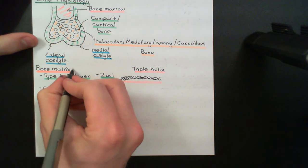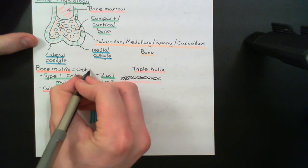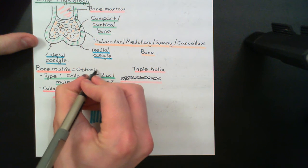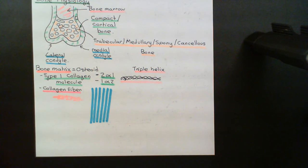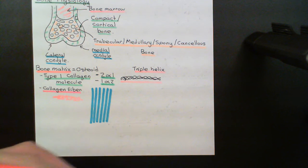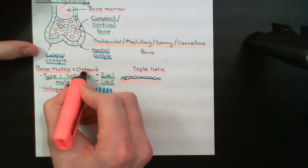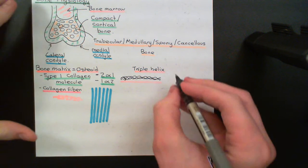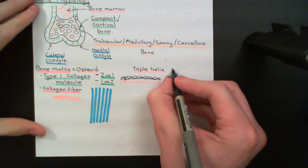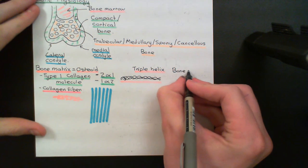Bone matrix is also often referred to as osteoid, so if you hear anyone referring to osteoid, that's just another name for bone matrix. Now there is another key component of bone beyond the bone matrix, which is the bone mineral.